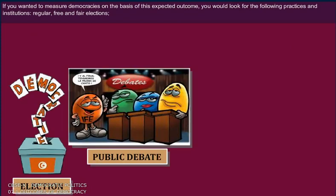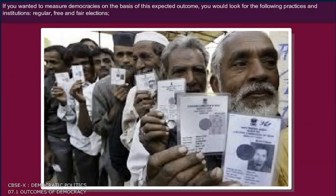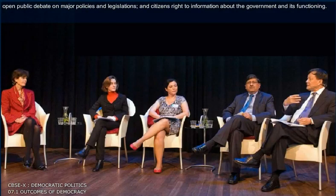If you wanted to measure democracies on the basis of this expected outcome, you would look for the following practices and institutions: regular, free and fair elections; open public debate on major policies and legislations; and citizens' right to information about the government and its functioning.